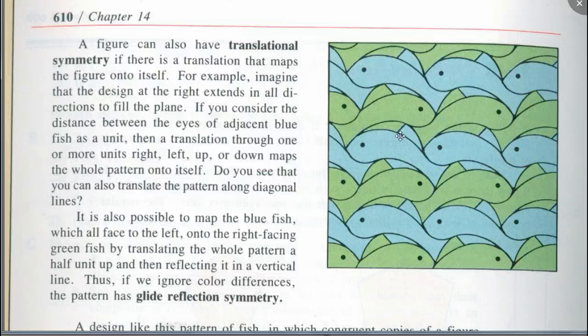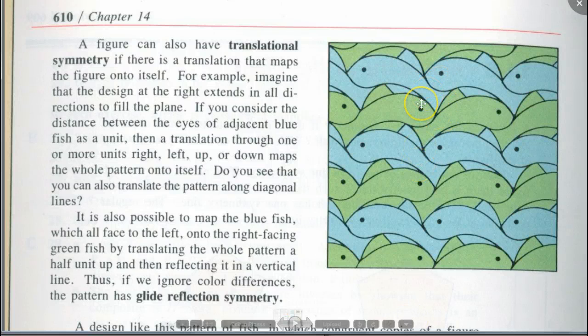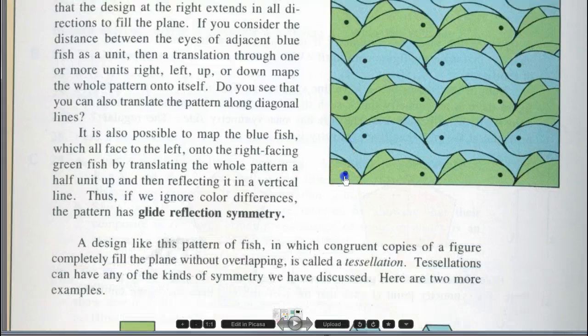Do you see how the glide reflection works? If you ignore the color difference, you could glide this down and then just reflect it along this line, and it will map onto itself exactly.